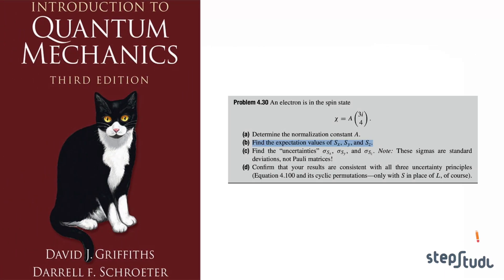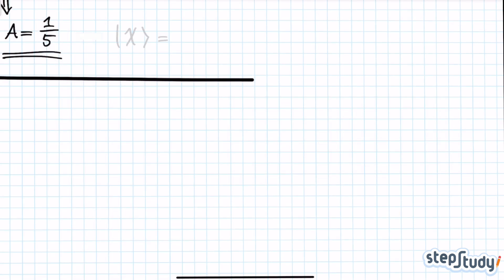We're solving problem 430B in Griffith's introduction to quantum mechanics. Given what we found A to be in the previous video, we can now write out what chi is in its entirety, and we can write out chi-dagger, which we're also going to need. Chi-dagger is of course just the dual vector to the chi-vector.